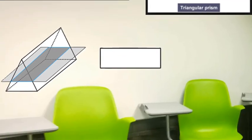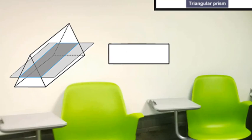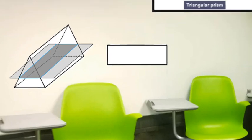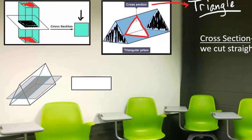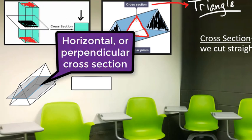Now down here we see the same triangular prism. And this time we give a kung fu chop perpendicular to the bases. So up here we did a parallel cross section because we went parallel to the bases. This is a perpendicular cross section, so we slice through there really fast.